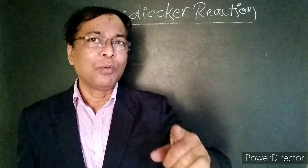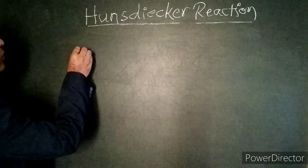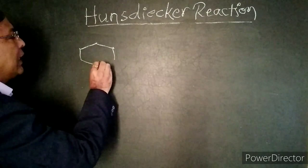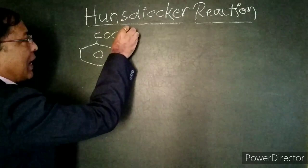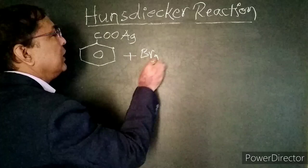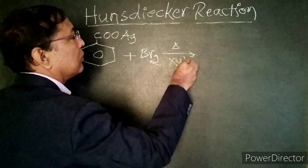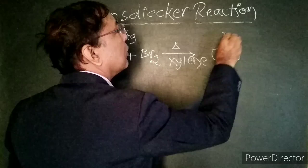Let us see the reaction first, then we will go for the full mechanism. The silver salt of an aromatic acid — we will take benzoic acid, which is benzene with a COOH group. When the H atom of benzoic acid is replaced by silver, we get silver salt of benzoic acid. When this silver salt of benzoic acid is heated with bromine in the presence of xylene solvent, we get bromobenzene, carbon dioxide, and silver bromide.